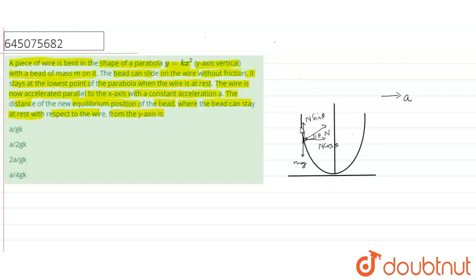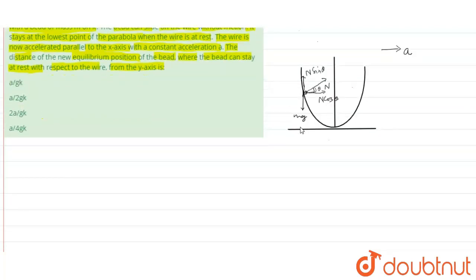So, now from frame of ground we can see for horizontal motion n cos theta will be equal to ma acceleration of bead and N sin theta will be equal to Mg.